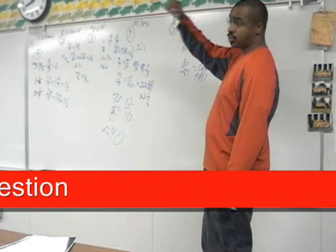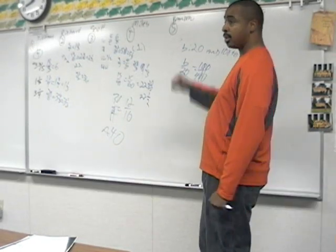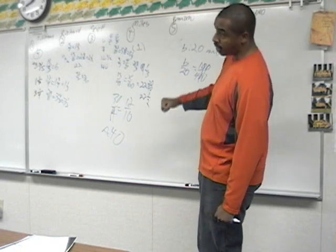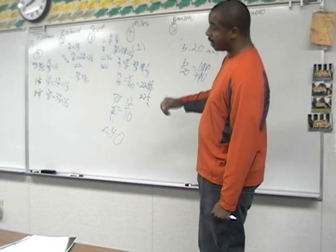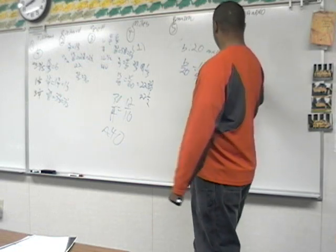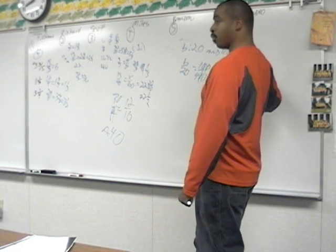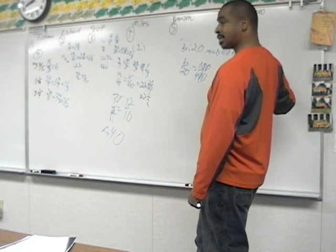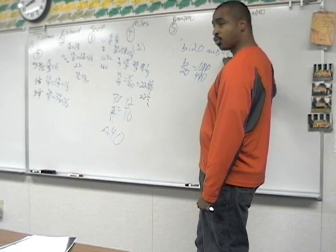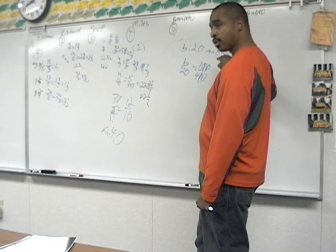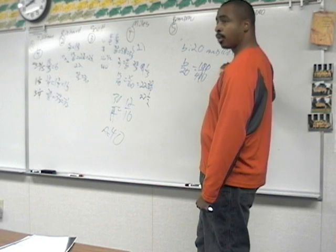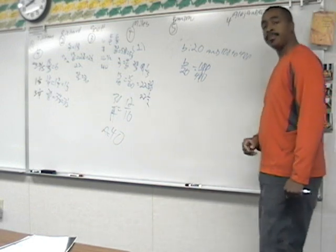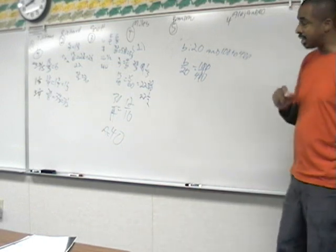If they say apples to pears, put the number of apples on top and the number of pears on the bottom. If they say 100 to 400, if it's written like this, whatever's referenced first goes on top, whatever's referenced second goes on bottom. That's the key.